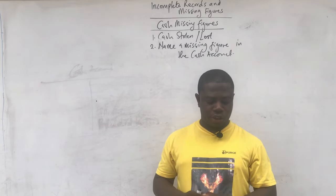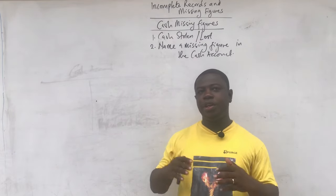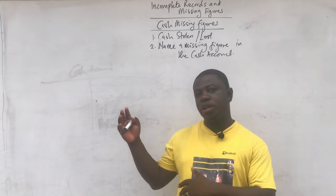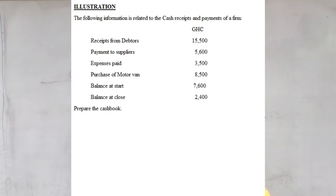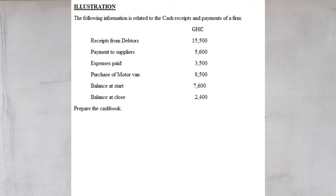I am going to show you an illustrative question. The following information is related to cash receipts and payments of a firm where there was no cash stolen. We have receipts from debtors: 15,500 Ghana cedis; payment to suppliers: 5,600; expenses paid: 3,500; purchase of motor van: 8,500; balance at start: 7,600 (the opening balance); and balance at close: 2,400 (the closing balance). You are required to prepare the cash book for the organization.